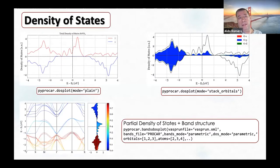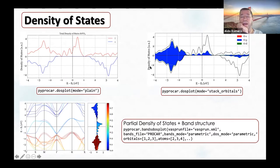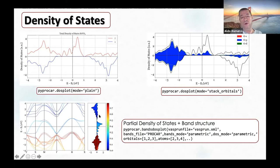Recently we also added analysis of the density of states, with many different ways of plotting it. We can use the plain mode like most codes provide—for example, spin up and spin down—or we can use the stack mode, putting different colors for different orbital types. We can select orbital type or species, change the intensity of contributions, and plot them side by side with the band structure, which users find very useful.